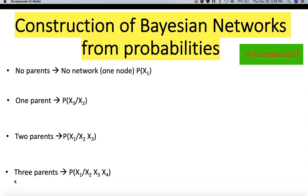Hello everyone. I'm going to explain how we construct Bayesian networks from probabilities. We are not going to learn how we construct a Bayesian network without probabilities — there is a separate technique for that called interpretive structure modeling. For today, I'm going to explain how, if you have the probabilities, you convert them into your Bayesian networks. I have four examples to elaborate this.